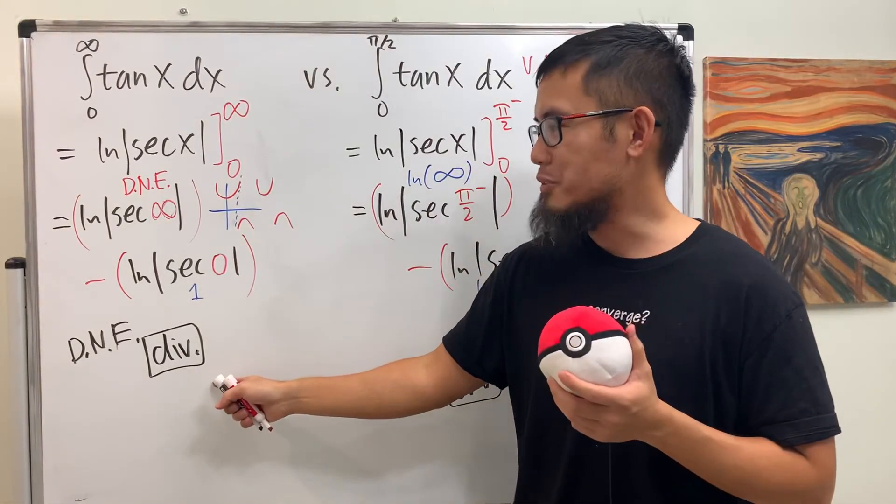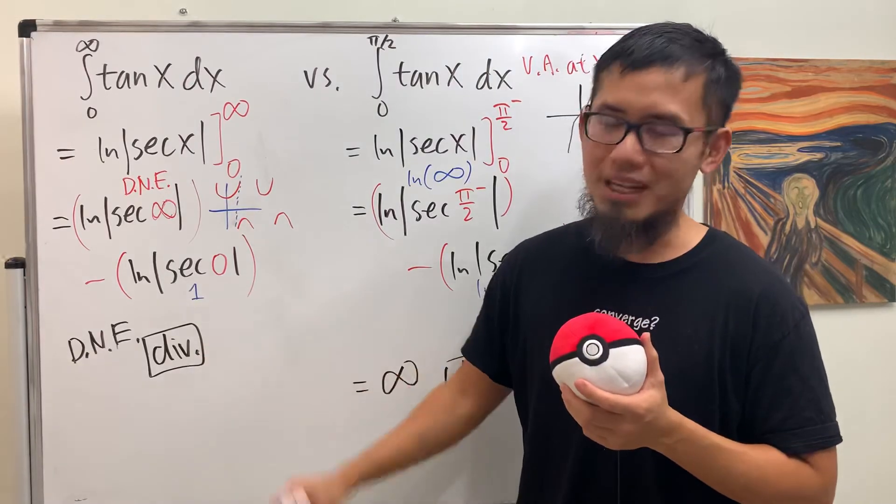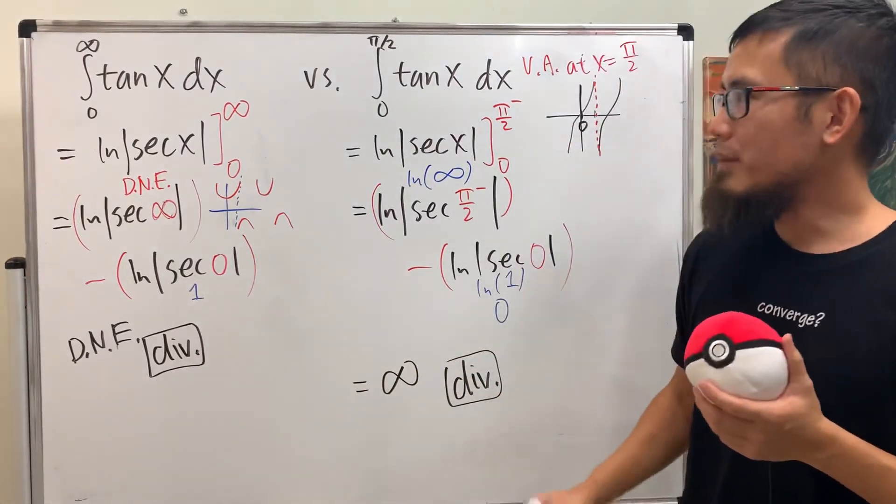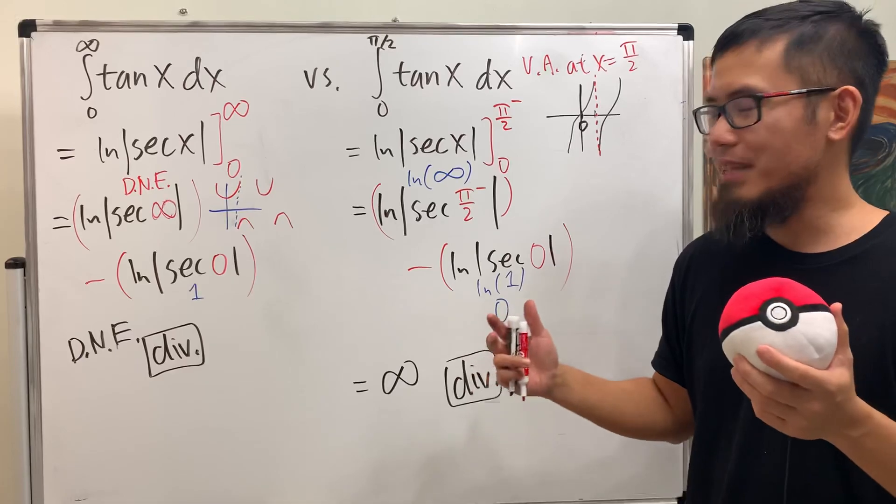But earlier, you cannot say this diverges to doesn't exist. Don't do that. So anyway, this hopefully helps. Let me know if you have any questions.